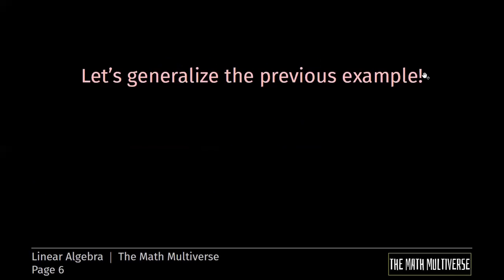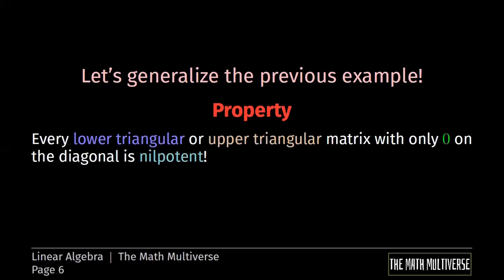Now let's go with a generalization. Let's generalize the previous example. As I said, many times with nilpotent matrices, we have a lot of zeros. Not always, but very often. So the property is the following: Every lower triangular or upper triangular matrix with only zeros on the diagonal is nilpotent.